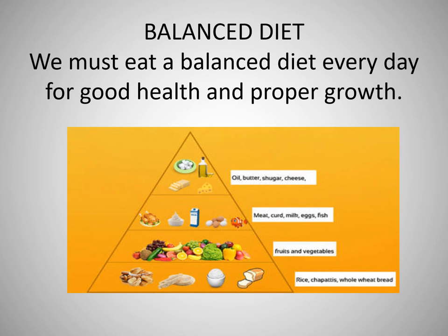Now I would like every one of you to make a diet chart for yourself, and it should be a healthy diet. Make three columns for breakfast, lunch, and dinner, and include all the healthy items in all three meals. You also have to mention the source — for example, if you are having milk, what components are you getting from it? If you are having chapati, what is the component of food you are getting from it? That way, you have to make a chart for yourself. This is your homework.